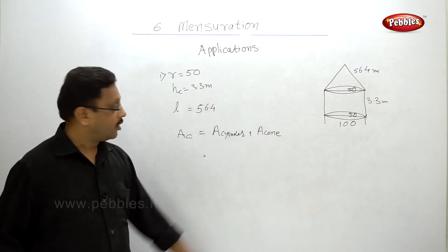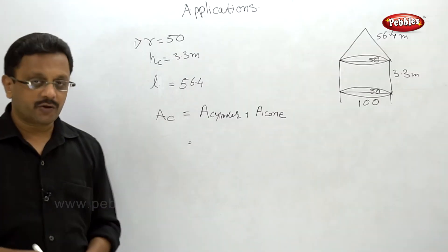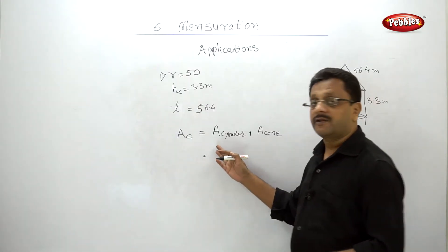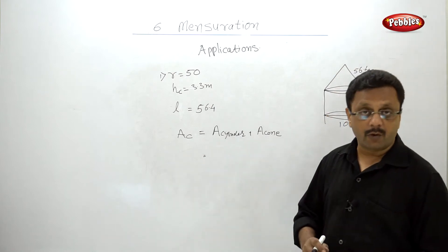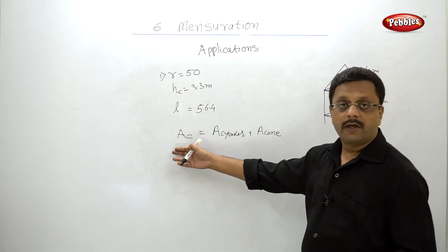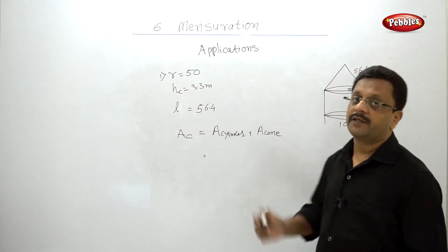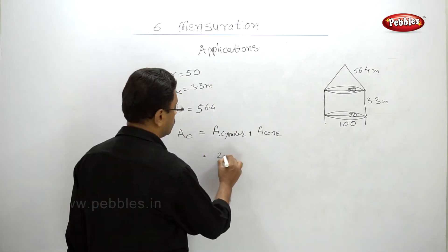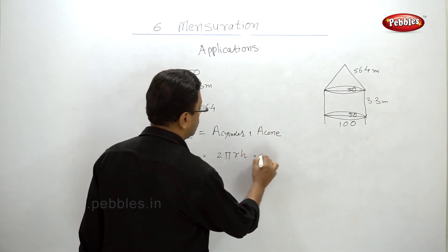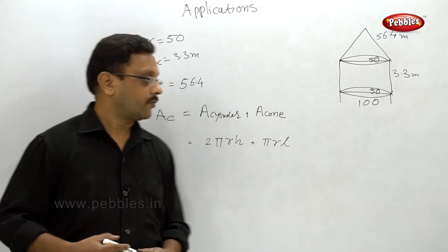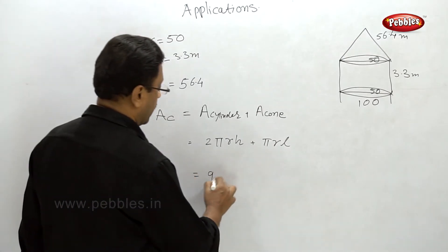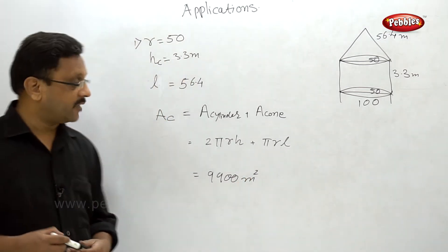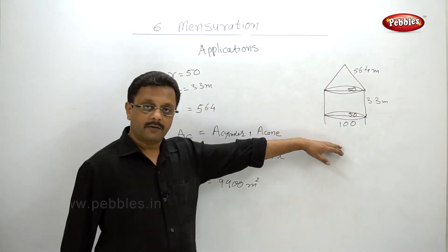Please pause the video, write the formulas, and refer to your previous notes to calculate the required canvas. The formula is 2πrh plus πrL, and the final answer is 9900 square meters. That much canvas will be needed to build this tent.